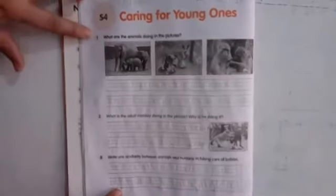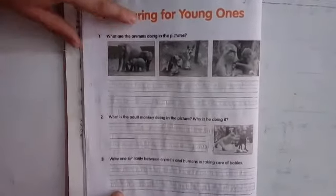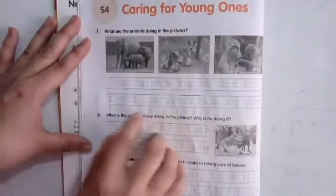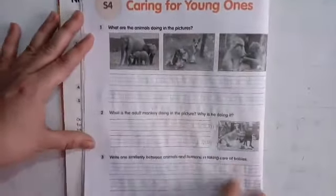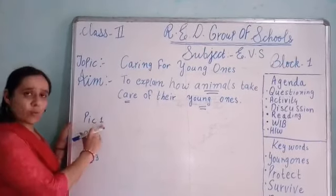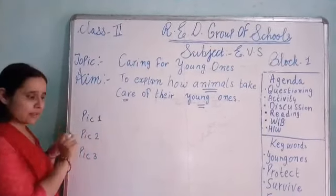Look at question number 1: what are the animals doing in the picture? Look carefully at first, second and third pictures. Aapko likhna hai ki animals is picture mein kya kar rahe hain. Pause your video — I am giving you time. I hope student you have completed your activity and done question number 1.